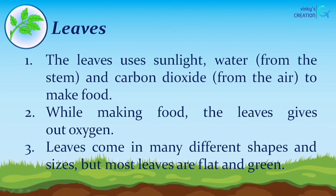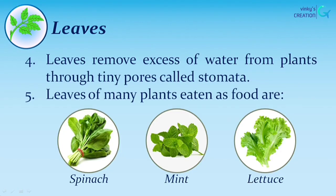Leaves. The leaves use sunlight, water from the stem, and carbon dioxide from the air to make food. While making food, the leaves give out oxygen. Leaves come in many different shapes and sizes, but most leaves are flat and green. Leaves remove excess water from plants through tiny pores called stomata. Some leaves eaten as food are spinach, mint, and lettuce.